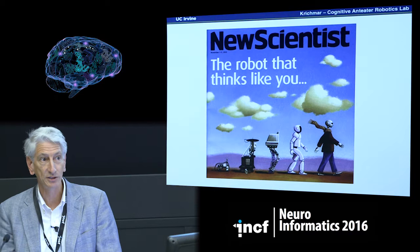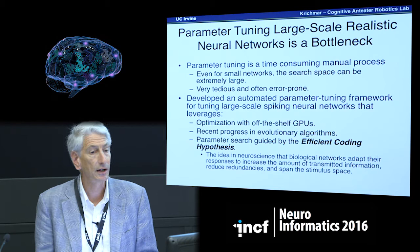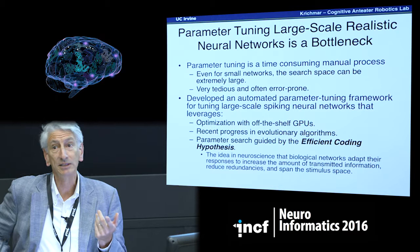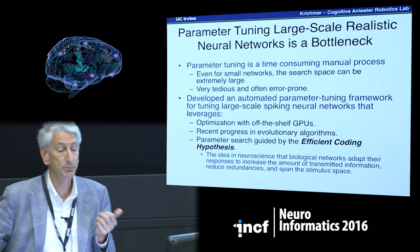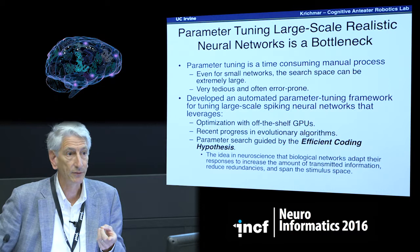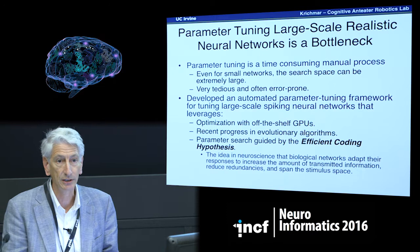One of the big bottlenecks is parameter tuning. This came up yesterday in discussions, and it's extremely time-consuming. If you've ever developed a large-scale neural network — spiking or otherwise — there's a lot of manual tweaking. It's very tedious and very prone to error. As part of our tool suite, we developed an automated framework to do this parameter search. Our simulator framework leverages off-the-shelf GPUs to increase parallelization and speed things up, plus some recent progress in evolutionary algorithms.